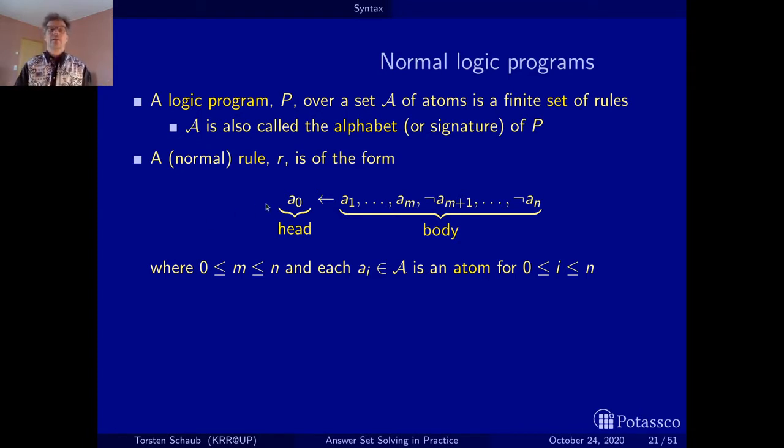When I talk about a rule, I mean something that has only atoms as its constituents, and notably also a single atom in the head. Because as you will see later, there are more complex language constructs like cardinality or weight constraints. Also sometimes there may be several atoms in the head that are disjunctively connected, and this is what we call a disjunctive rule. Whenever I talk only about a rule, I mean a normal rule, and this is a rule of this type.